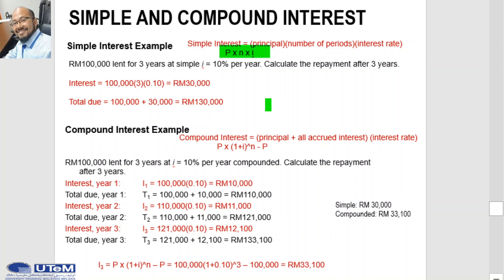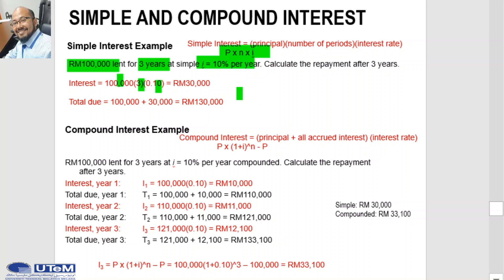Simple interest equals principal times number of periods times interest rate. The principal value is RM100,000, the number of periods is 3 years, and the interest rate is 10% per year, expressed as 0.1. So the simple interest value is RM30,000. Therefore, the total due after 3 years based on simple interest is RM130,000.